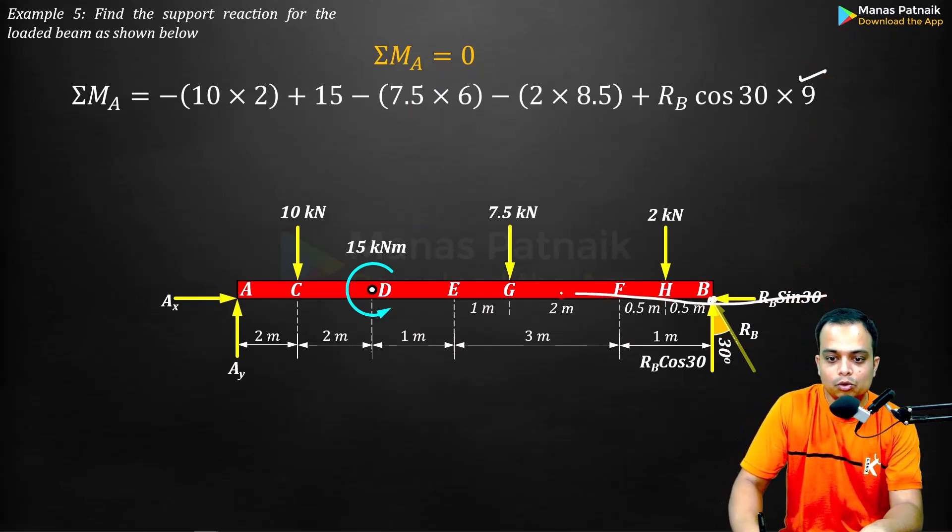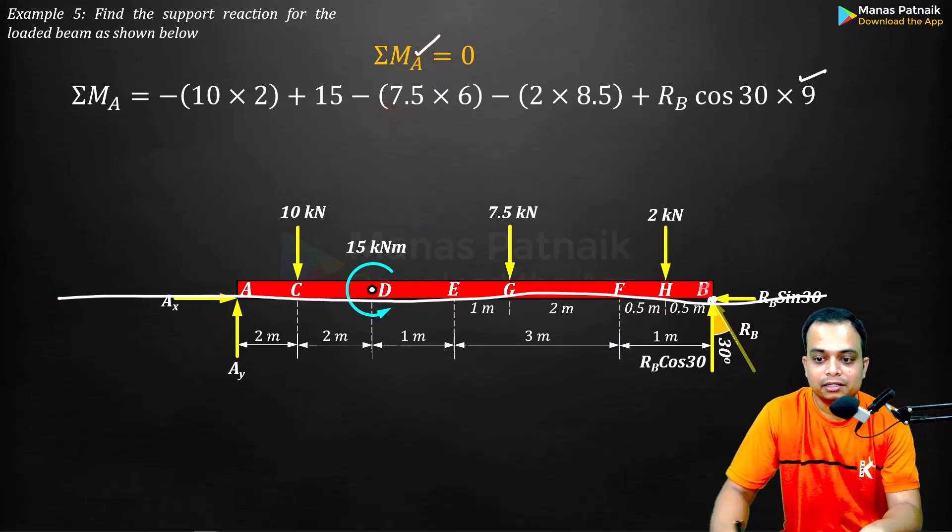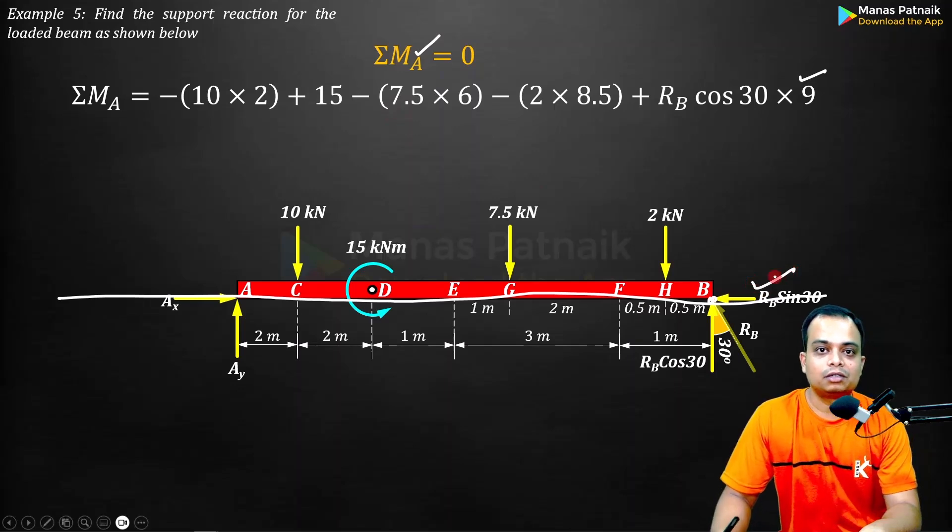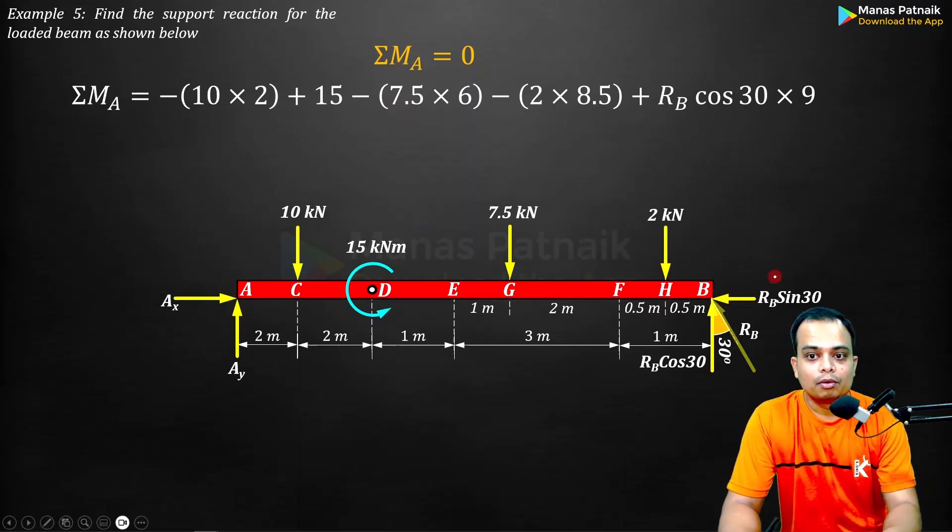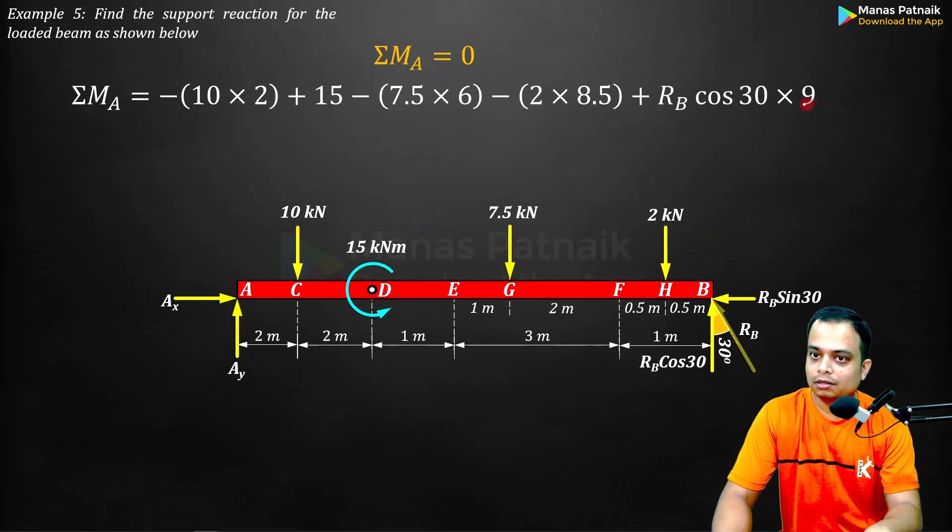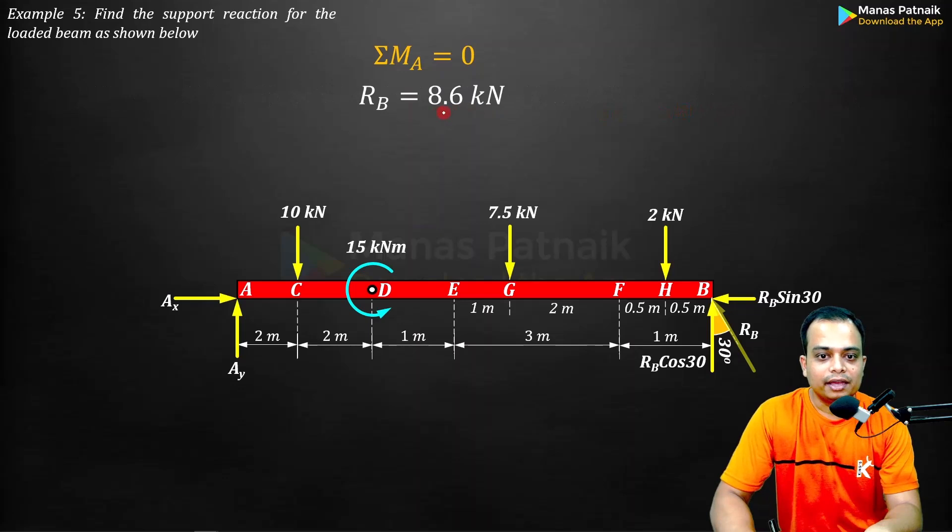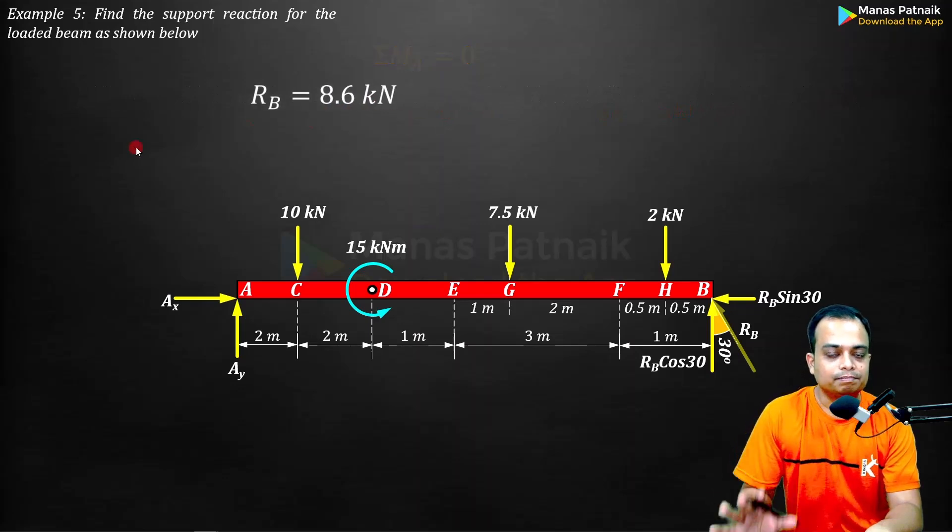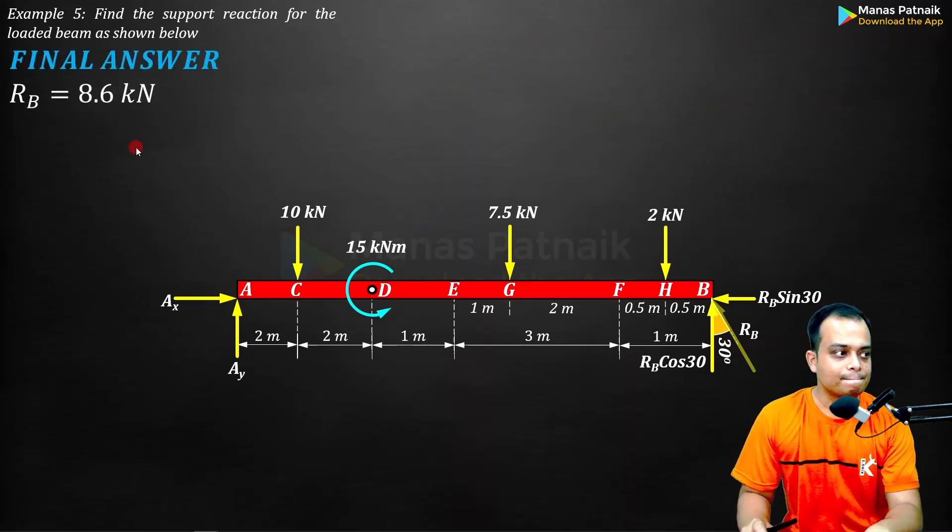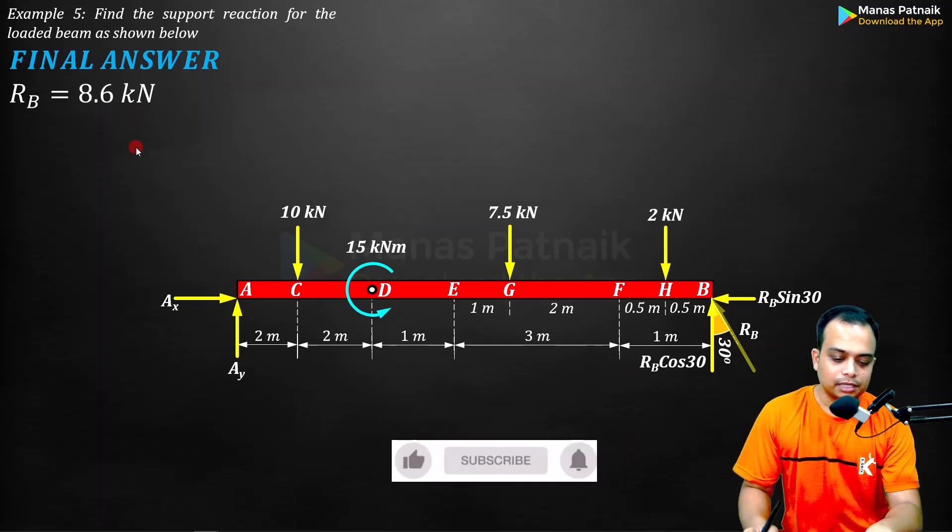Finally, take a look at RB cos 30. RB cos 30 is creating an anti-clockwise moment at A, that's why a positive sign. So plus RB cos 30 multiplied by the entire beam span AB which is nine meters. As far as RB sin 30 is concerned, it is passing through point A, so RB sin 30 contribution to the moment is zero. All of this equated to zero, get the value of RB, it's 8.6, and that's my first answer.